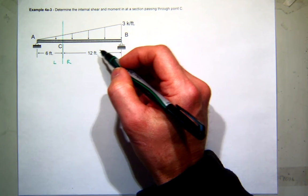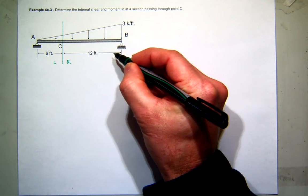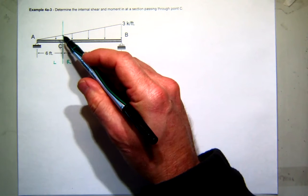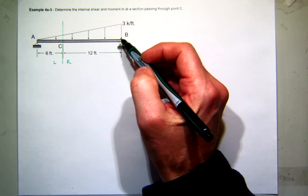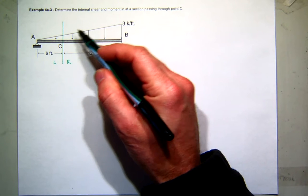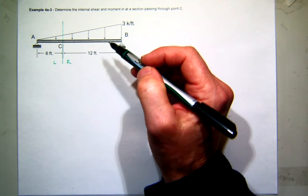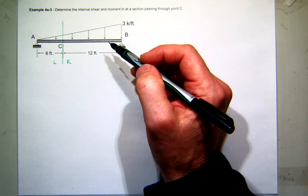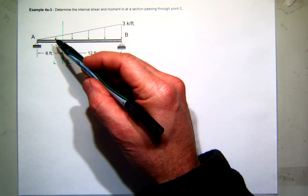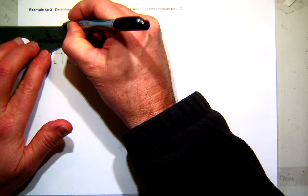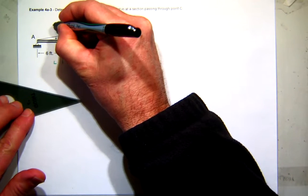Then look at the right-hand side. Well, I have a little less to do in terms of my reactions because it's a roller. There's only one unknown at a roller. But look at the resulting load distribution on the right-hand side. What is it? It's trapezoidal. Trapezoids are a little more work than triangles. So I think it'll be easier for us this time to go left.